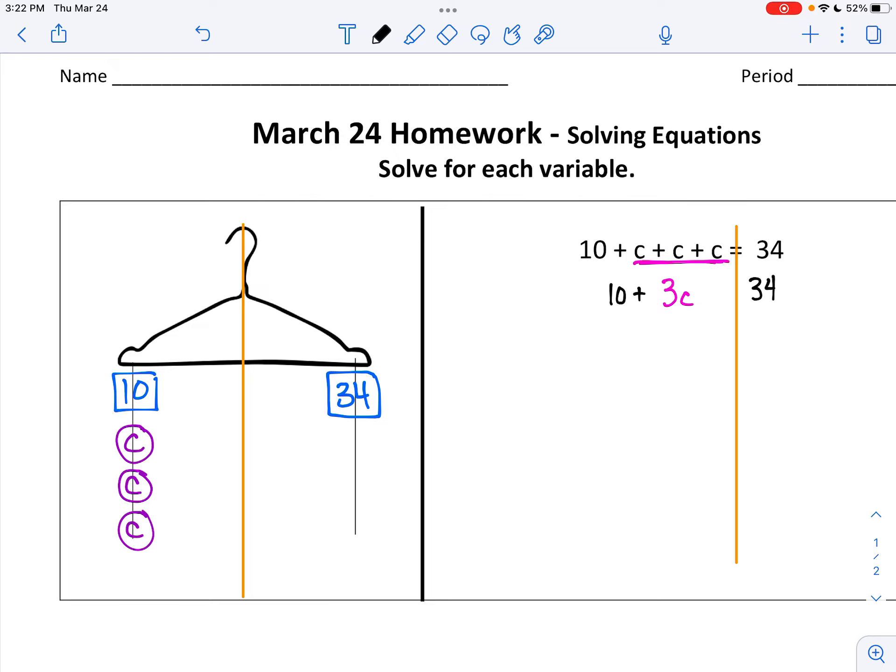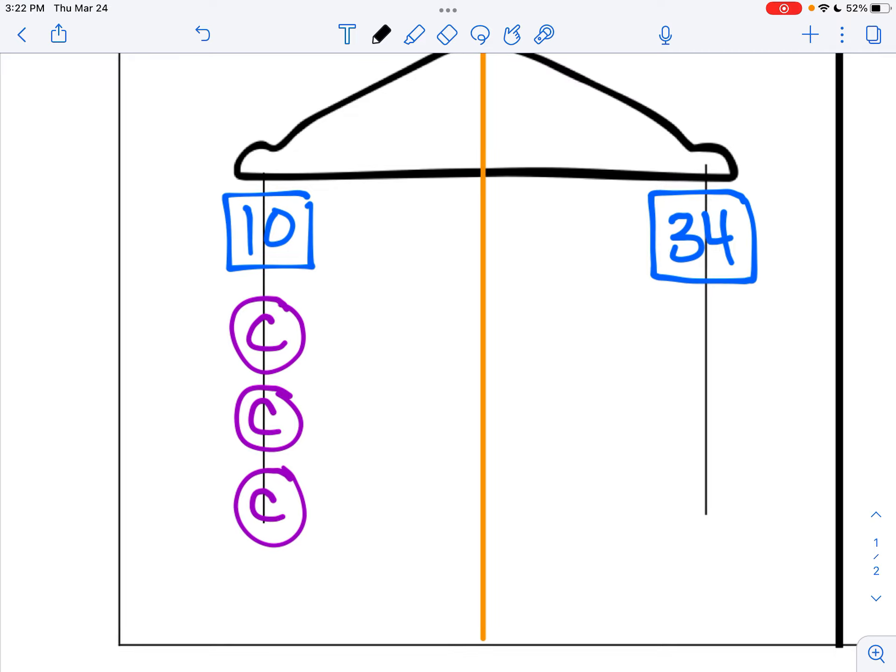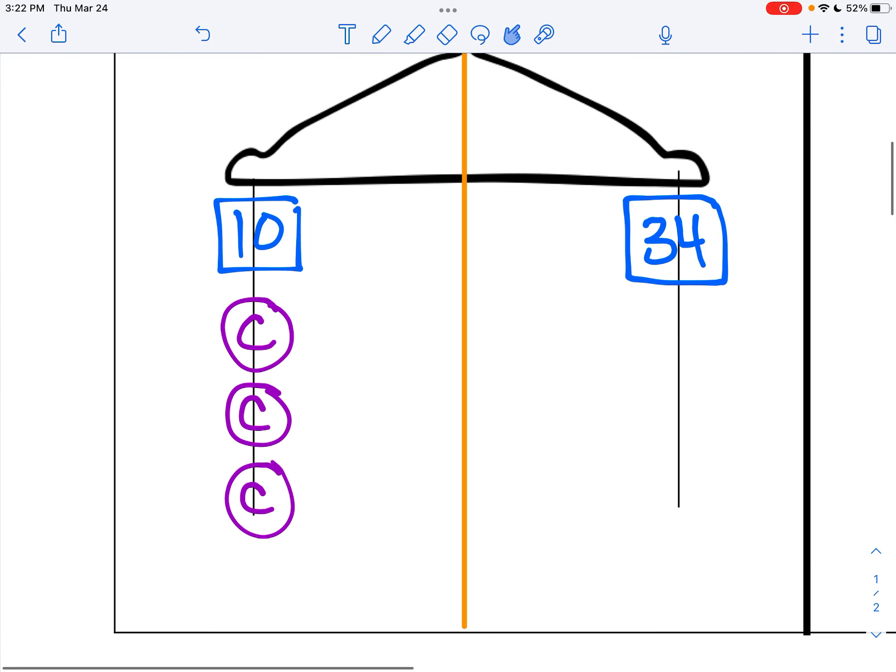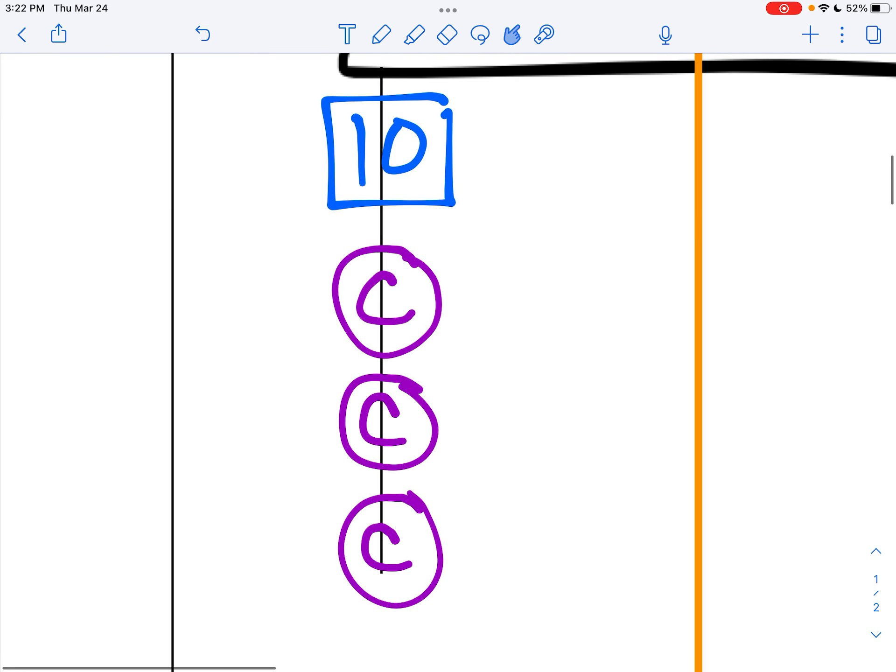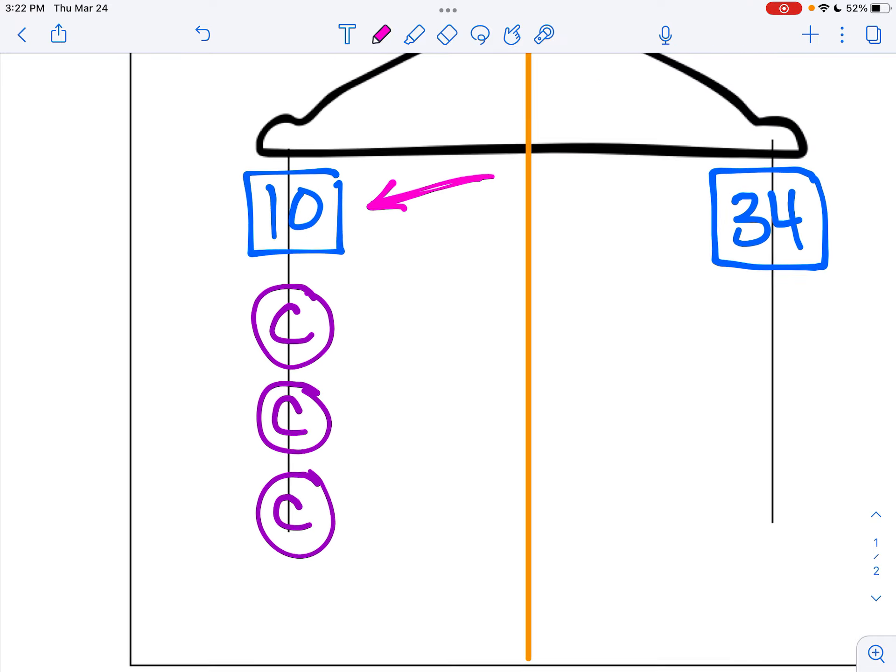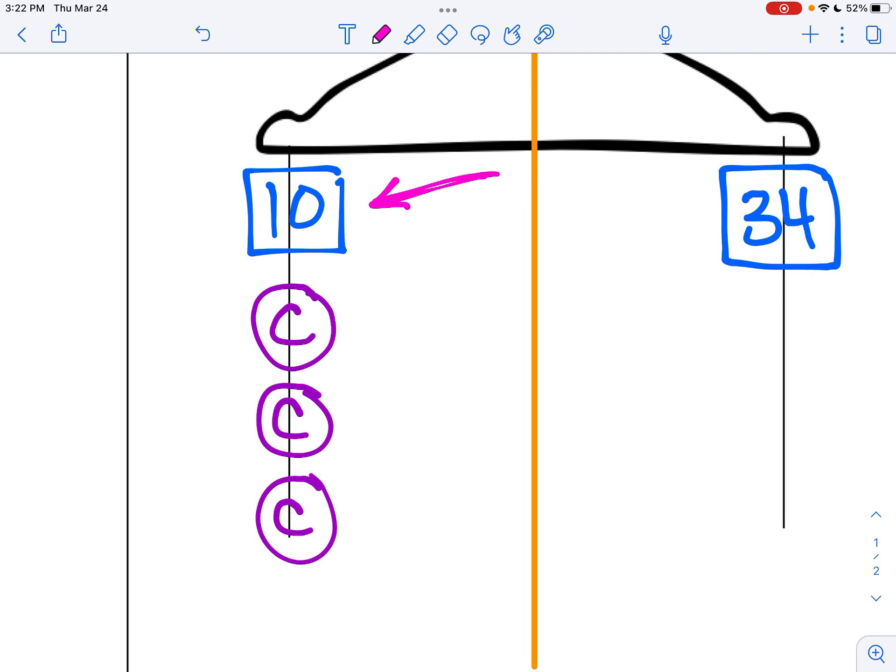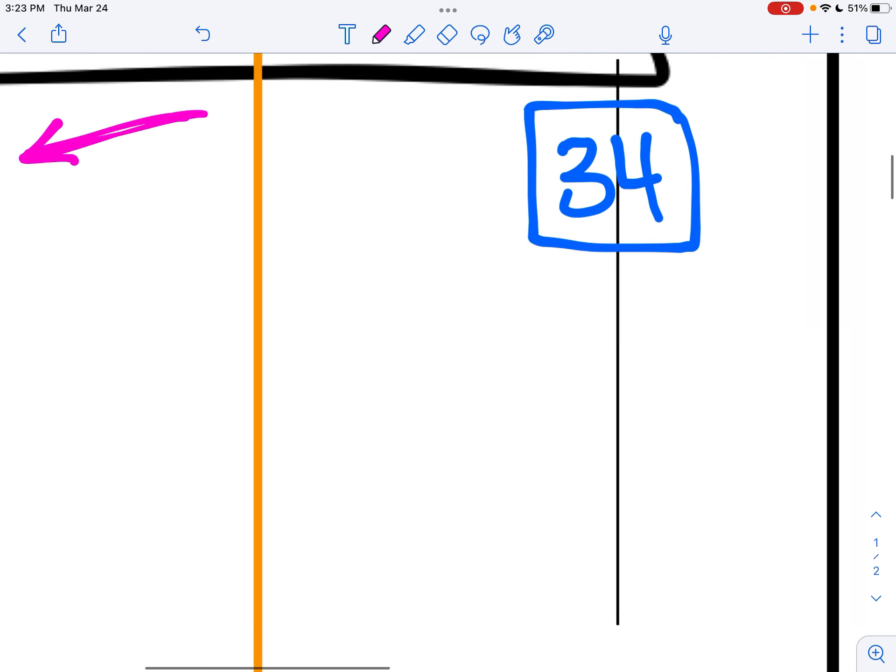The next step is to isolate the variable. So if I look just at the left side, I see that it isn't just letters over here. There's also this 10. So if I want to isolate the C's, I got to get rid of the 10. But I can't get rid of the 10 because there's no 10 on the other side. So instead, I'm going to write a 10 and change the top number.